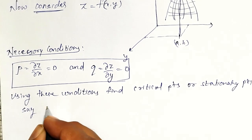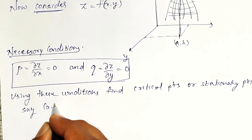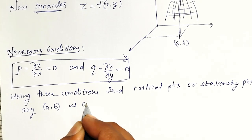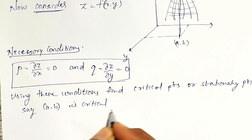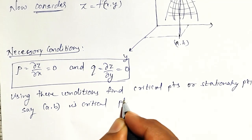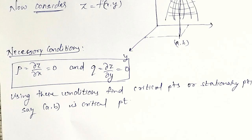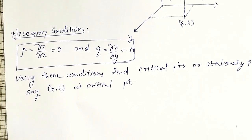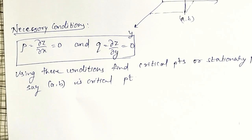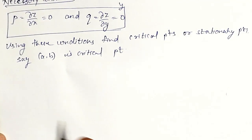Say a, b is a critical point. If a, b is the critical point, then how do we decide whether it is a maximum point or minimum point? To check that, we use the sufficient conditions.